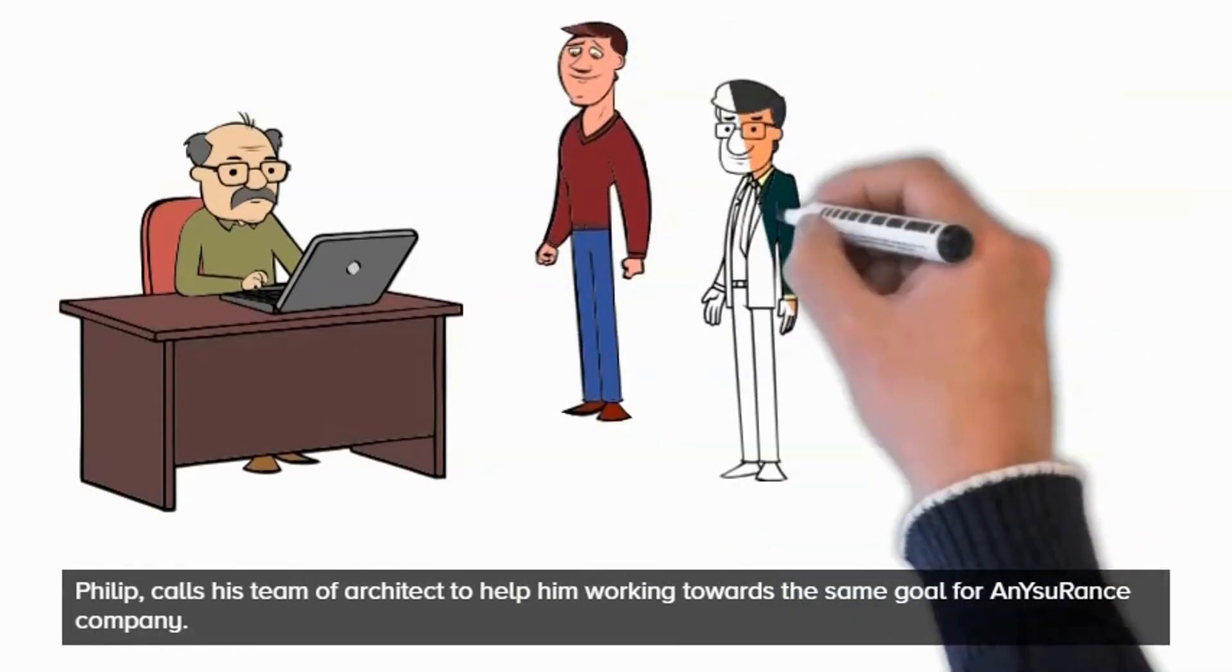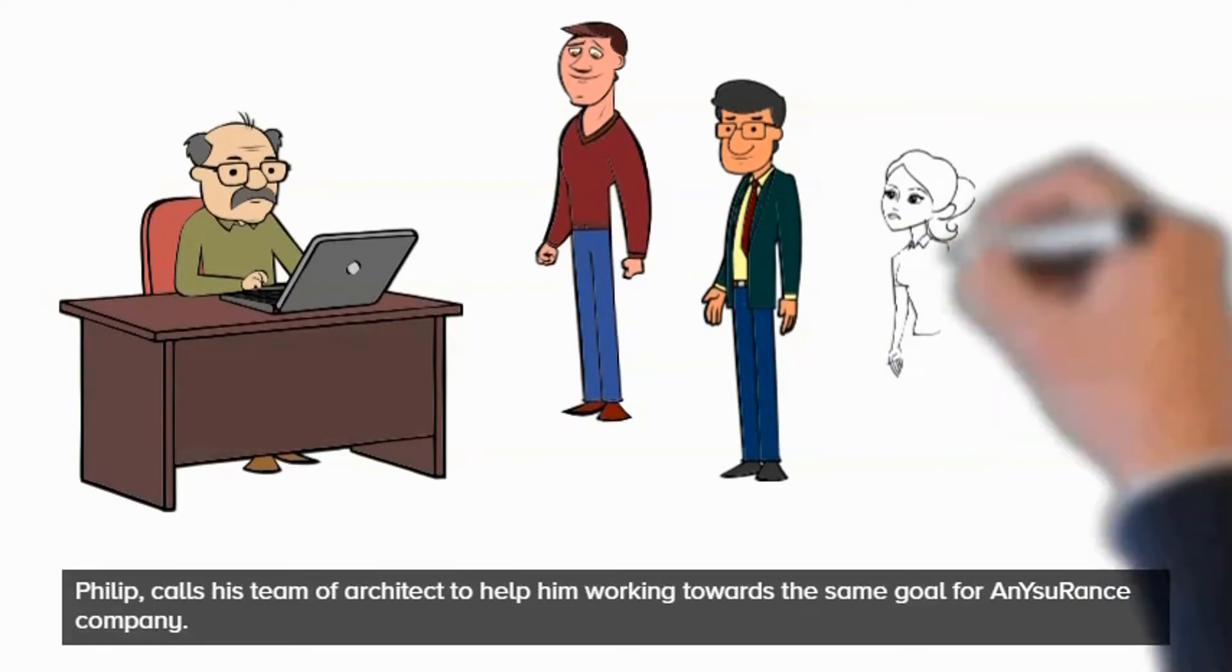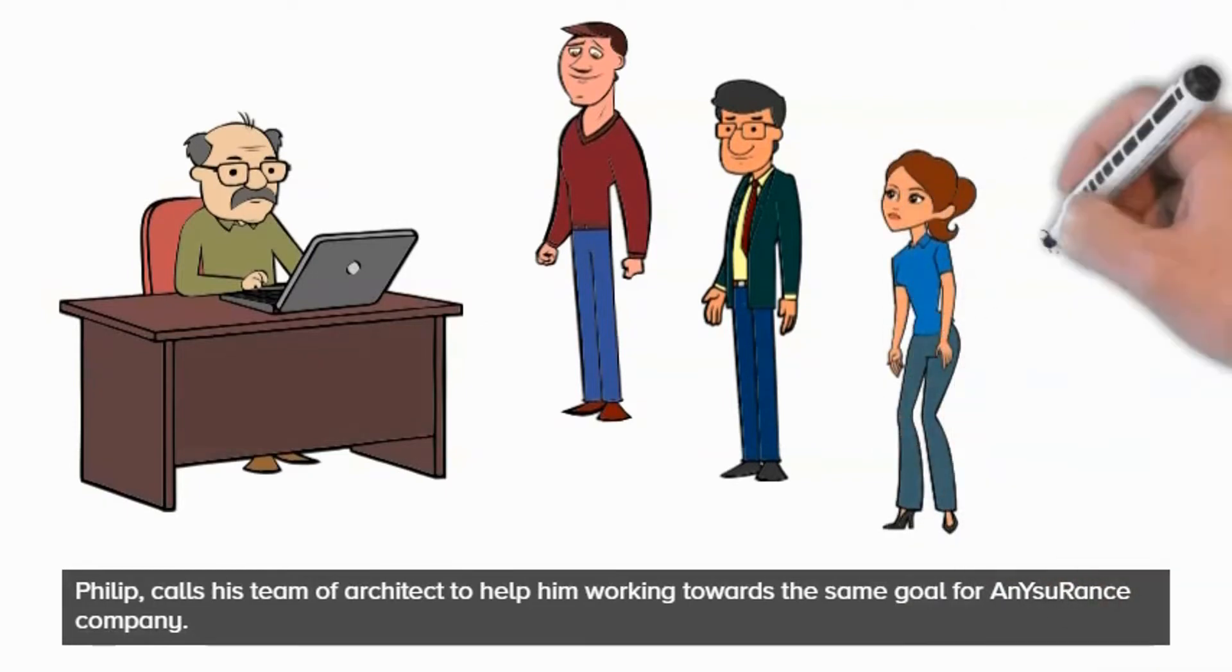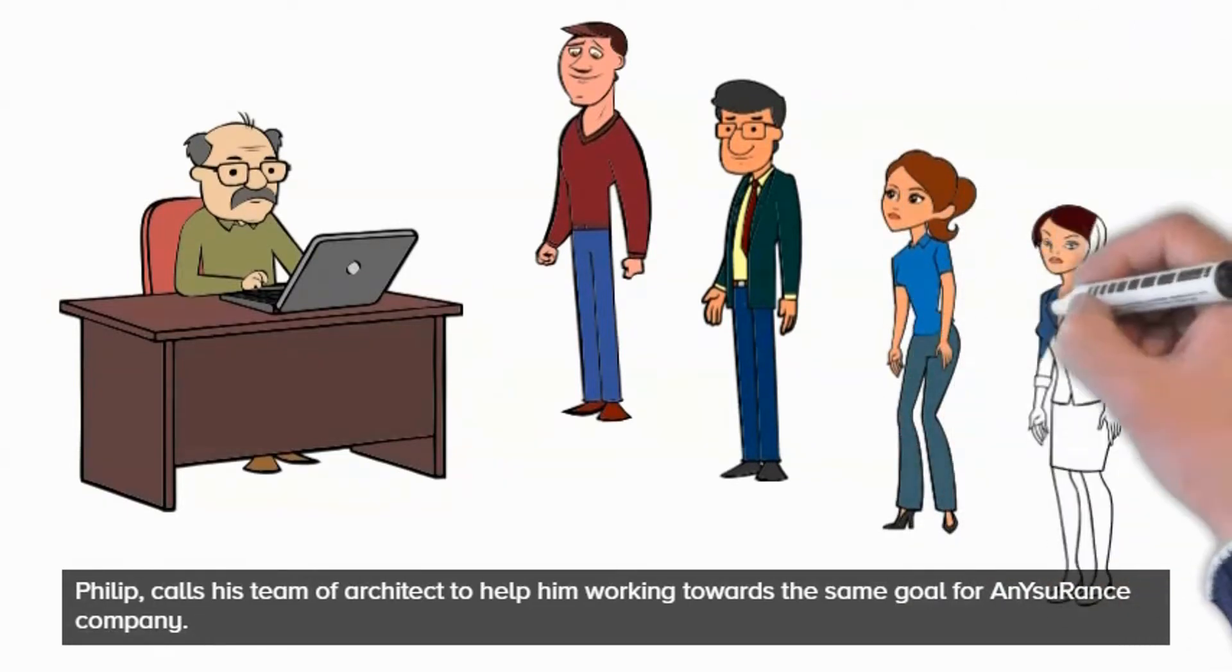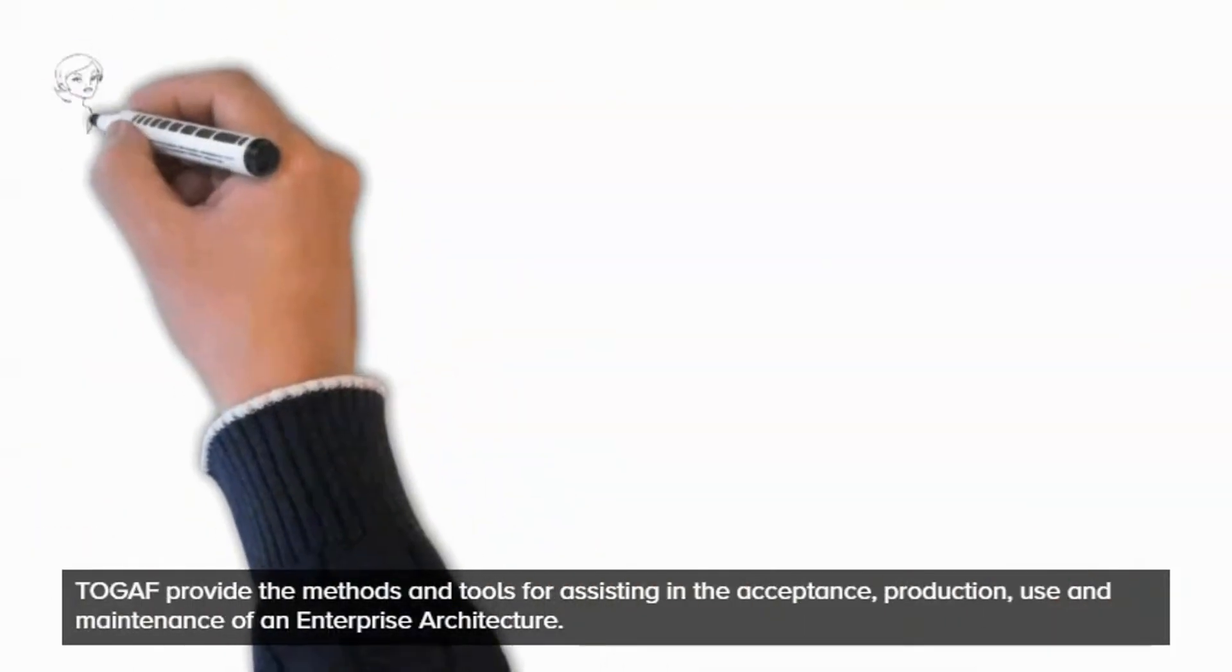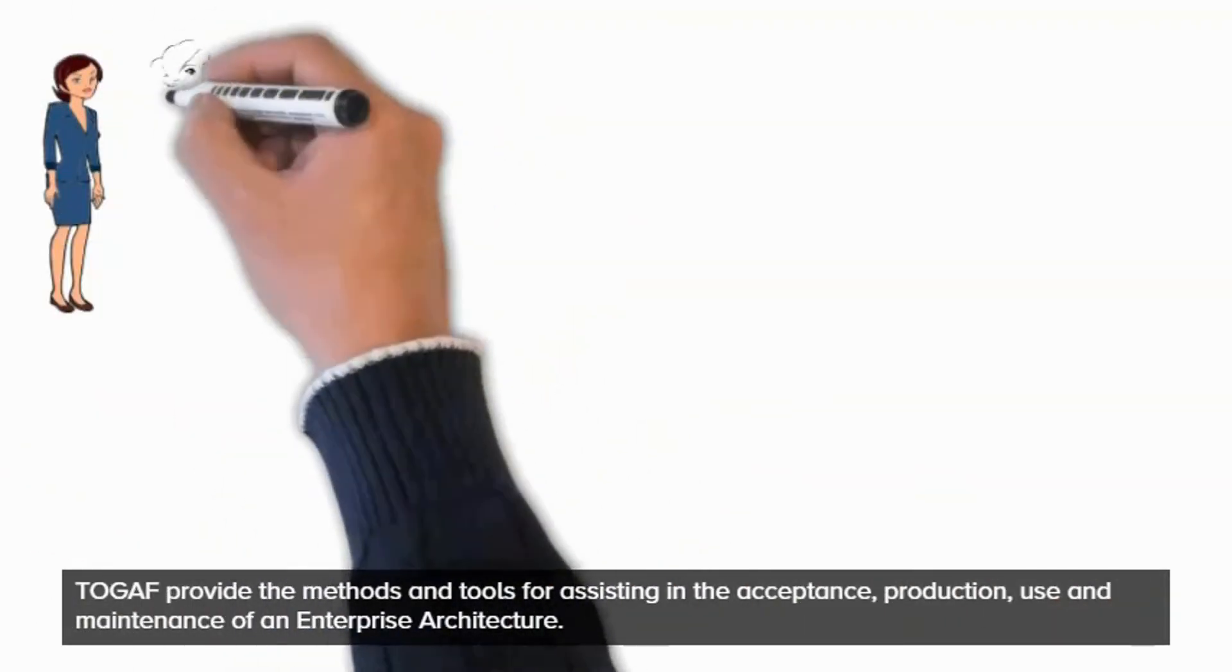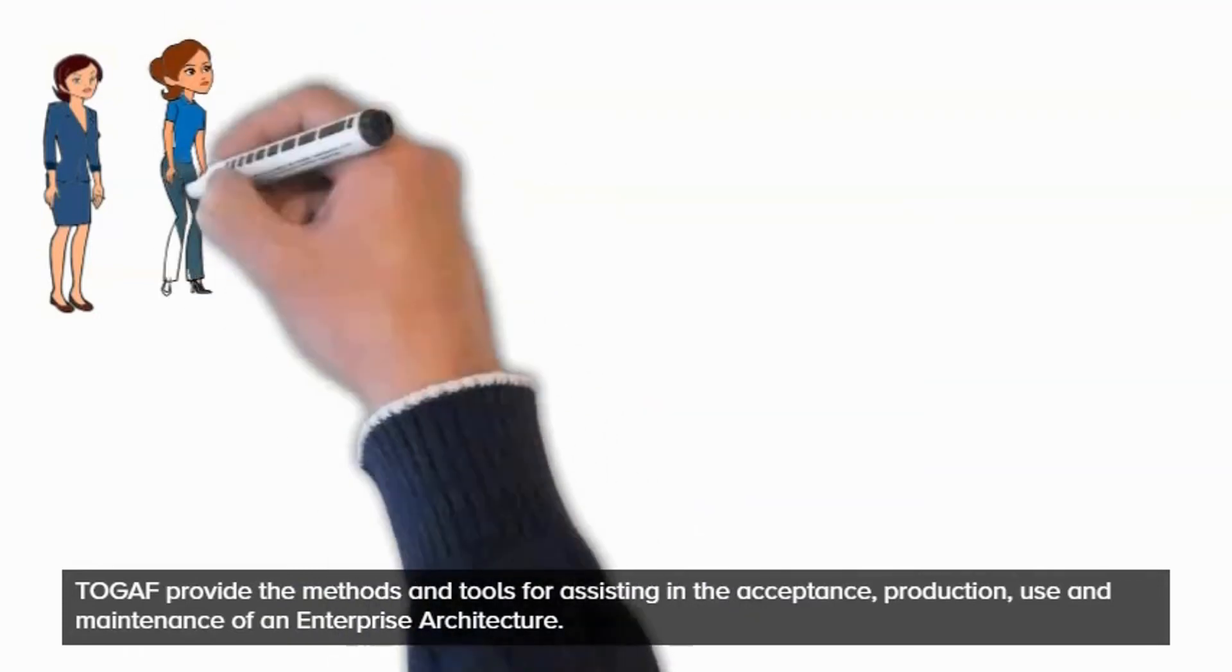Steve, David, Amanda, and Jane are the architects who will be assigned work in four domains of architecture in TOGAF terms: business, data, application, and technology as per their capabilities. However, all four are new to TOGAF and Philip will guide them how to go about it.